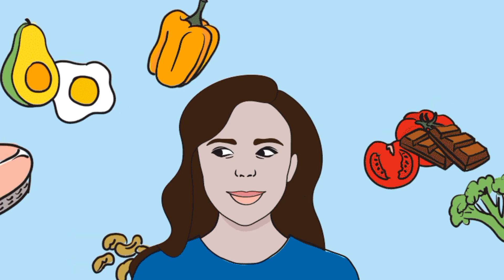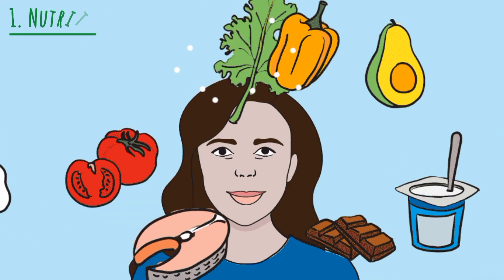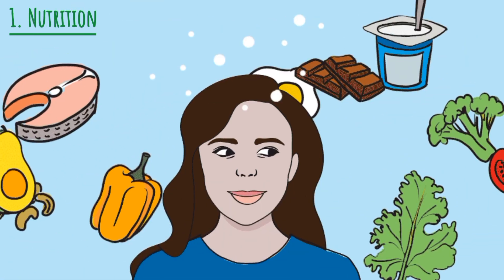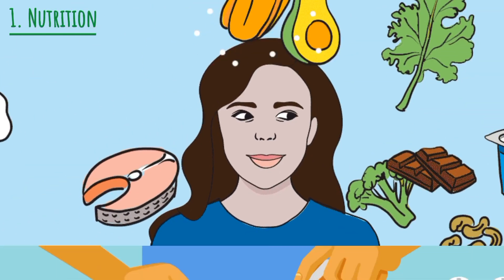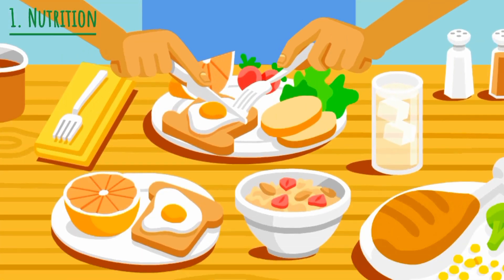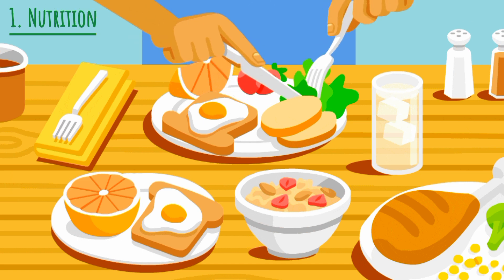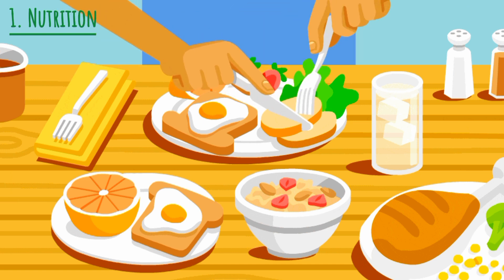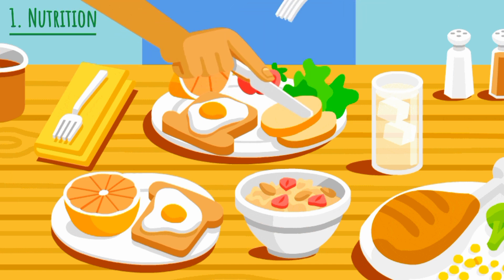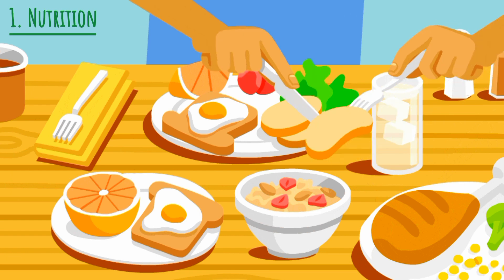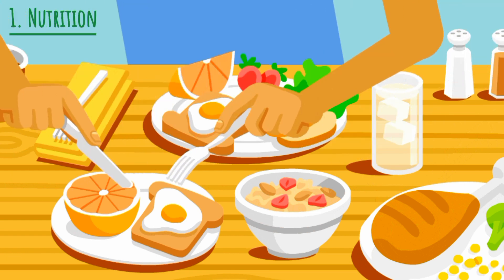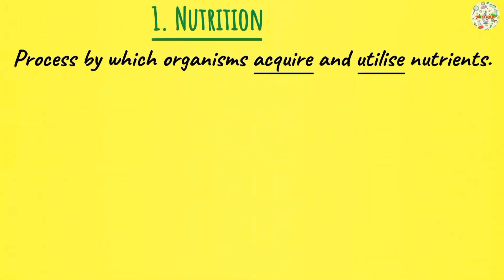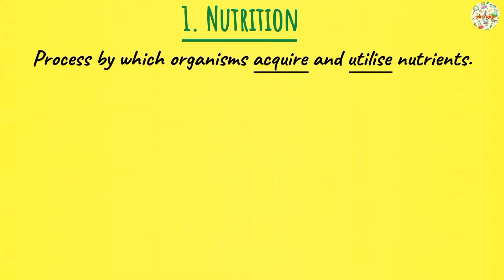Now, on to our first characteristic: nutrition. So for living things to grow and carry out different body processes, they require a source of food, and this is what is termed as nutrients. The process through which living things acquire and use the food is what is known as nutrition.